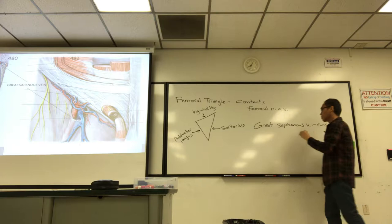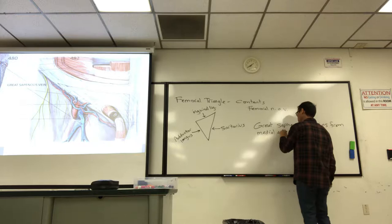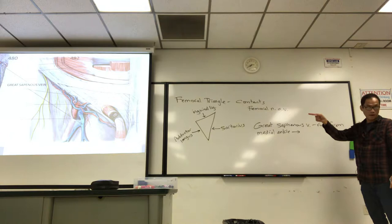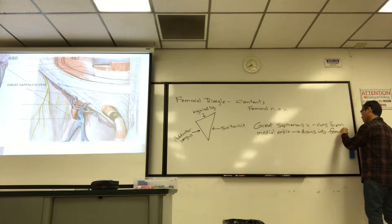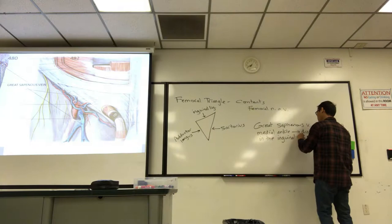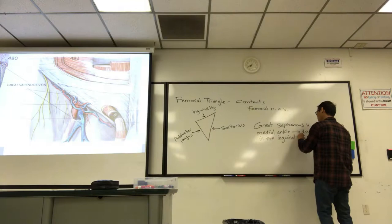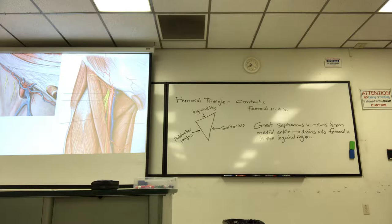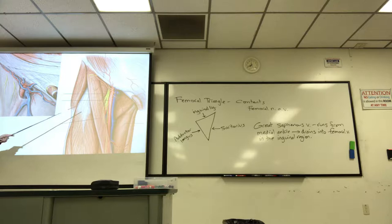The great saphenous vein runs from the medial ankle all the way up the leg and thigh into the inguinal region, where it drains into the femoral vein. Not to be confused with the femoral vein — the saphenous vein is on top of the fascia lata. You can see it here cut and draining into the femoral vein. I usually tag the femoral vein within the femoral triangle, right next to the artery and the nerve. The great saphenous vein I can tag anywhere on the lower extremity.